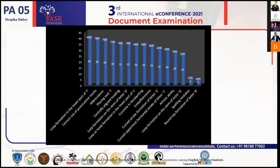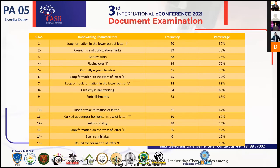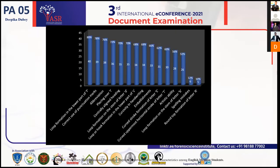Only two Hindi medium students used artistic ability in their paragraph samples. Correct use of punctuation marks was also a prominent factor — 39 English medium students used correct punctuation, compared to only 10 Hindi medium students. Round top formation of letter A was another prominent factor: only five English medium students used it, whereas 33 Hindi medium students wrote A with a round top formation. There were a few other characteristics also visible in the graph.